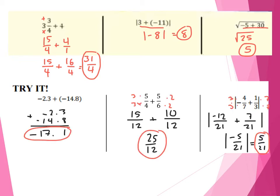Let's take a look at what we got. The first one — adding two negatives together as decimals. You can punch this into a calculator or line up the decimals. You're adding two negatives together, so you're going to get a larger negative value — negative 17.1.